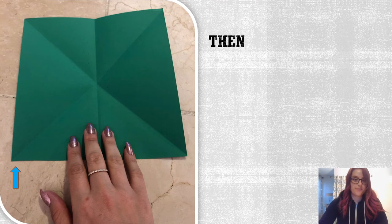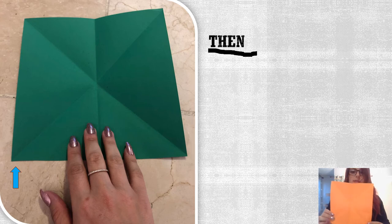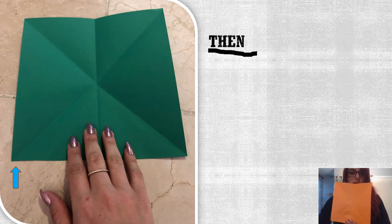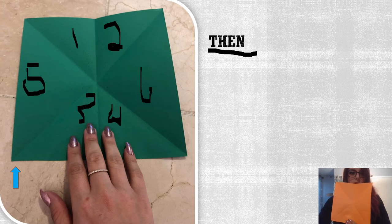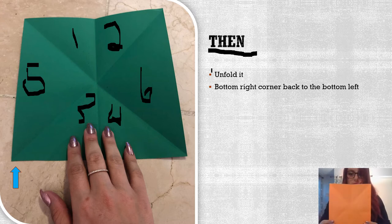Then, unfold it. Once we unfold it, it should look like this — we have two more triangles now on the top and on the bottom.